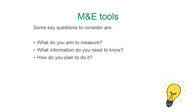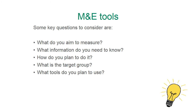Another key question to address before gathering data is to think about the target group of your monitoring and evaluation process. In the case of the LTLT program, the ultimate beneficiaries are children. Therefore, the objectives you are expected to measure are those you set at the beginning of the program — a program designed to be implemented with children — meaning the target group of your process is children who participate in the LTLT program. Only after considering these questions can you start thinking about what tools to use, which tools are most appropriate for your M&E goal, what information you need to collect, the resources you have, and the target group you are working with.